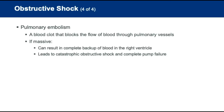Pulmonary embolism is essentially a blood clot that occurs in the pulmonary circulation and blocks blood flow through the pulmonary vessels. When a massive pulmonary embolism occurs, it can prevent blood from being pumped from the right side of the heart to the left, resulting in a complete backup in the right ventricle and leading to catastrophic obstructive shock and complete pump failure.